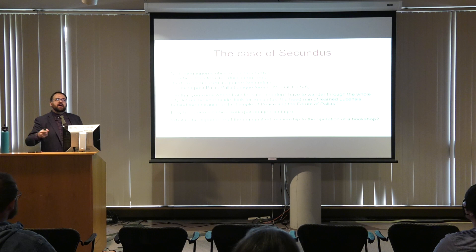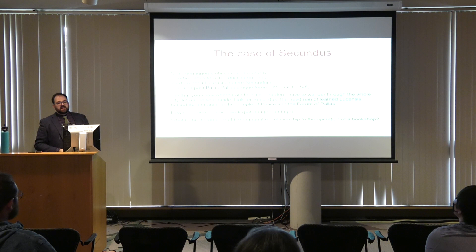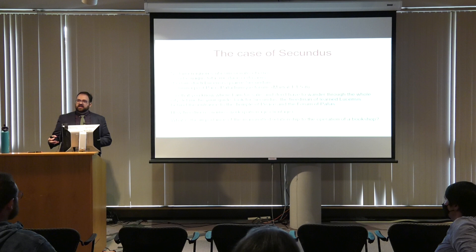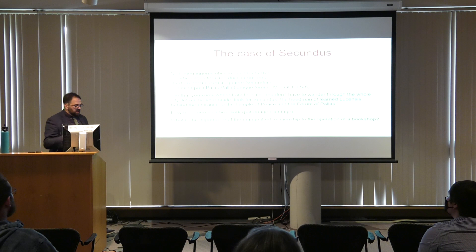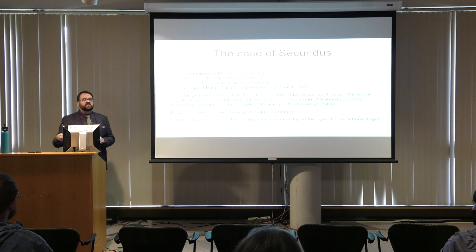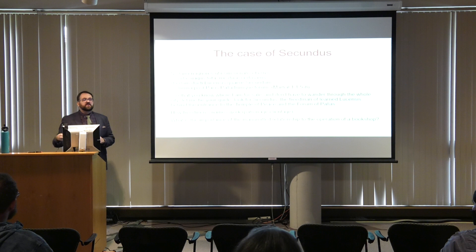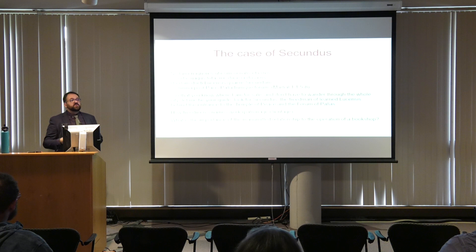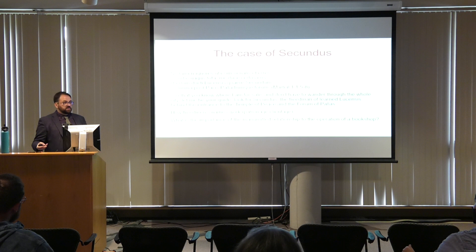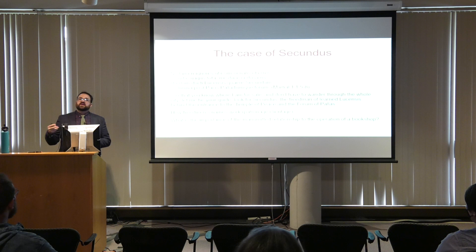A big bookshop making many copies almost certainly had an enslaved staff. So we're talking about books being copied by slaves in big households, and also books being copied by slaves in bookshops. Does it matter — is it of material significance — that the people doing the work were enslaved? How do the particular features of Roman slavery affect or shape Roman book circulation?